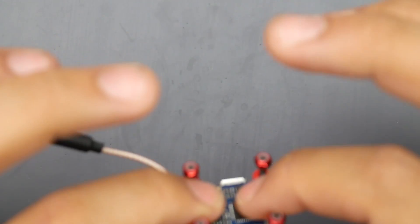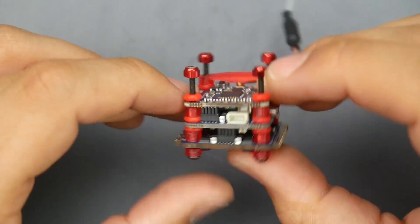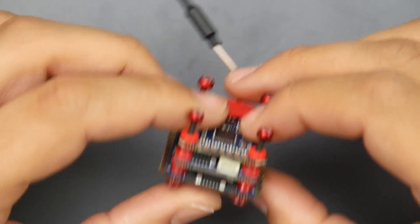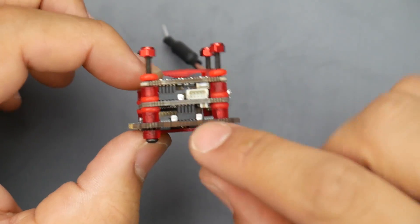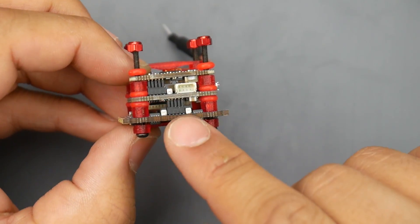Hey what is up guys and welcome back. So today we have a new stack from iFlight, it's called the iFlight Success. Now this is a pretty interesting stack. First of all, as you can tell here it's all connected via pins. We have the ESC connected to the flight controller via pins and then the flight controller connected to the VTX via pins.